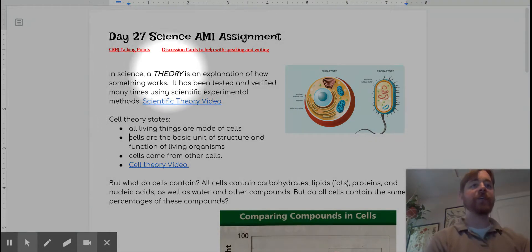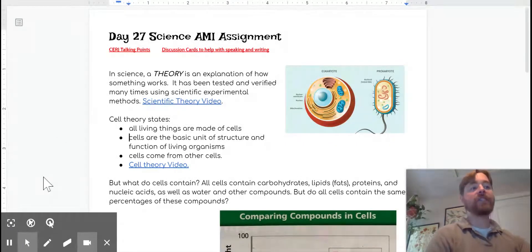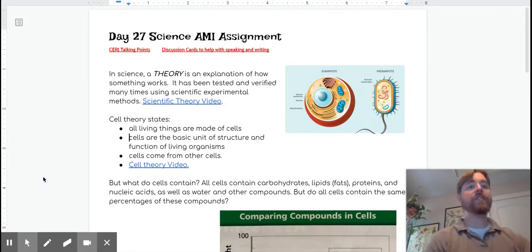So it starts off in science. A theory is an explanation of how something works. It has been tested and verified many times using scientific experimental methods. And then I have a little video for you about scientific theory versus other things. So a theory has been tested. It's kind of like a hypothesis that's been tested over and over and proven to be true several times.